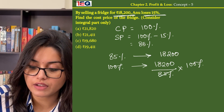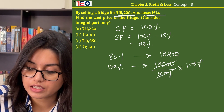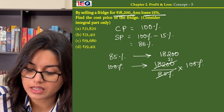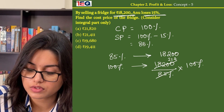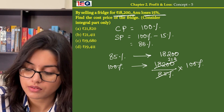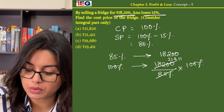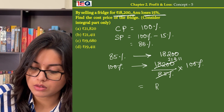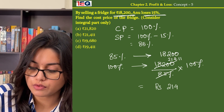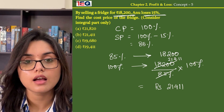On dividing, we get 85 into 18,200. Working through the division steps, the amount comes down to ₹21,411, which is option B.